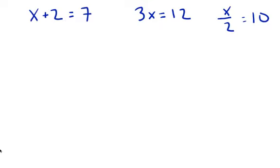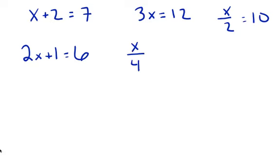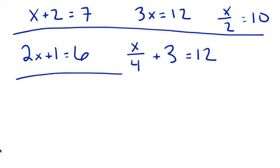Those are our one-step equations. Then we did our two-step equations, which were more like 2x plus 1 equals 6. We also had a couple of x over 4 plus 3 equals 12. So here's our one-step equations and here's our two-step equations.